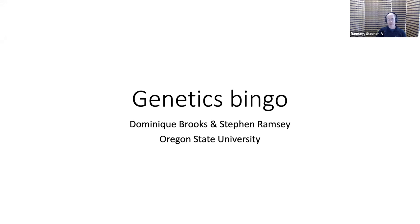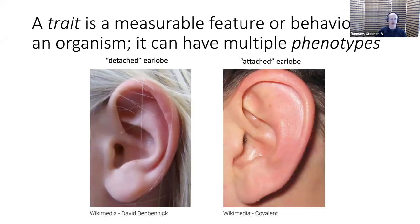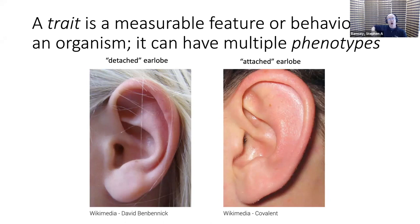Let's start by talking about what a trait is. The way I think about it, a trait is something that is measurable — it could be either a physical feature or a behavior — but either way it's of an organism: an animal, a plant, even a microbe.